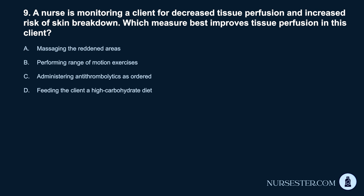Question 9. A nurse is monitoring a client for decreased tissue perfusion and increased risk of skin breakdown. Which measure best improves tissue perfusion in this client? A. Massaging the reddened areas. B. Performing range of motion exercises. C. Administering antithrombolytics as ordered. D. Feeding the client a high-carbohydrate diet.